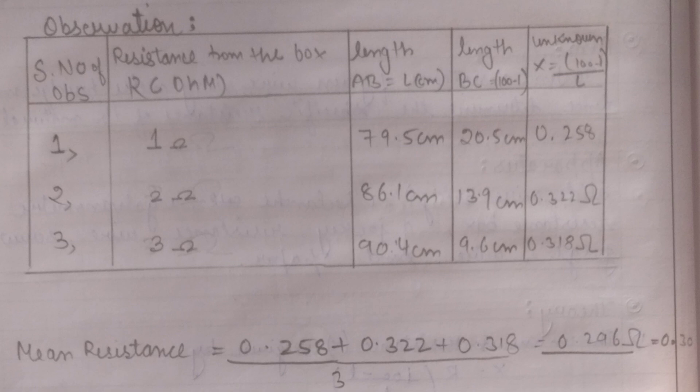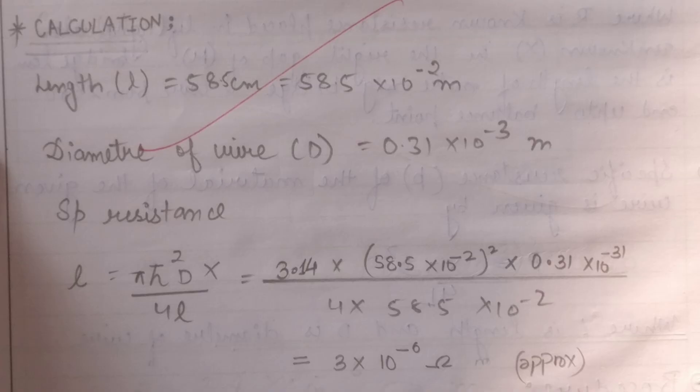This image tells us about the observations we have obtained — as you can see, the resistance of the wire that has been obtained. This image shows the calculation that had been done while performing the practical.